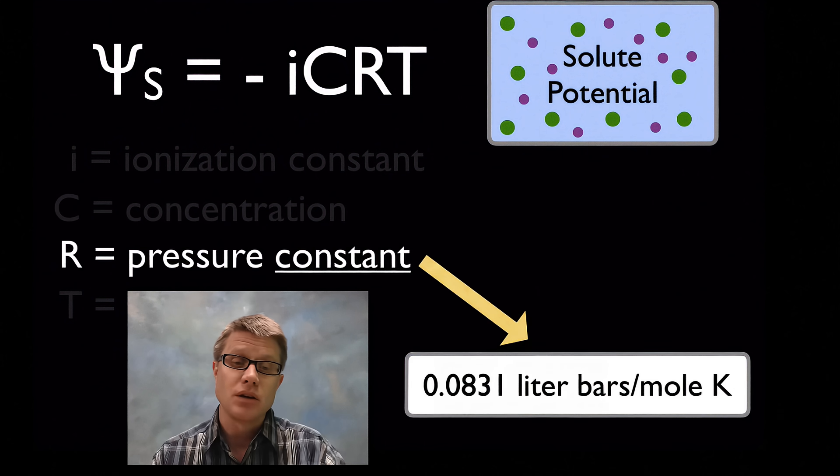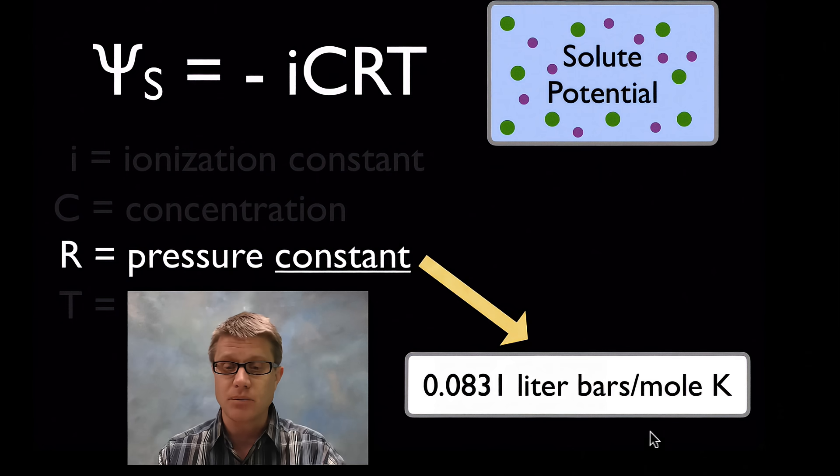Next thing we have in our equation is the pressure constant. Pressure constant is just that, it's always going to be the exact same thing. And it's always going to be 0.0831. I wouldn't memorize it. These units at the end are going to be important as we solve a quick problem.